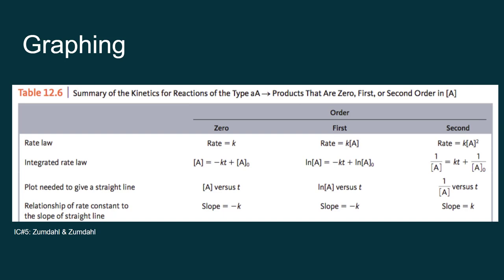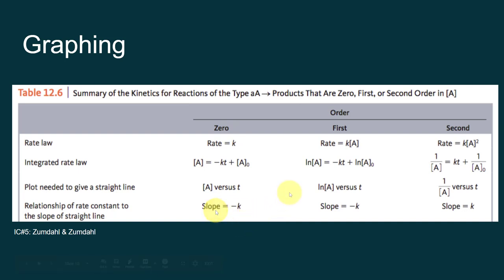You can look at the shape of the graph and figure out if it's first, second, or zeroth order. What you're looking for is a linear relationship. If it's linear when you graph concentration versus time, then you know it's zeroth order, and your k value is the negative value of your slope. When you graph the natural log of concentration versus time and get a linear relationship, you know your reactant is first order — the rate constant is the negative value of your slope. Finally, if you graph the inverse of concentration versus time and find a linear relationship, you know your reactant is second order. The slope equals the positive value of k, and your y-intercept is the inverse of your initial concentration.